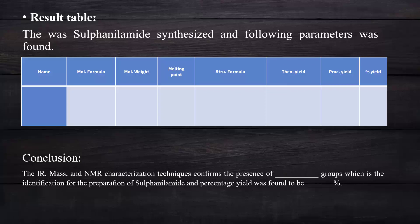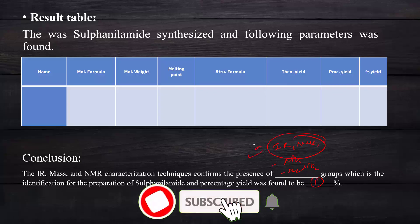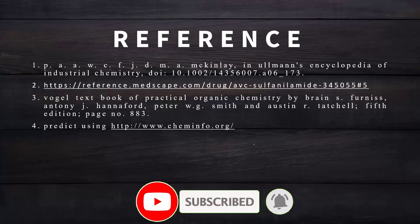The IR, mass, and NMR characterization techniques confirm the presence of the sulfonamide group, which identifies the successful preparation of sulfanilamide, and the percentage yield was found to be as calculated. Thank you for watching.